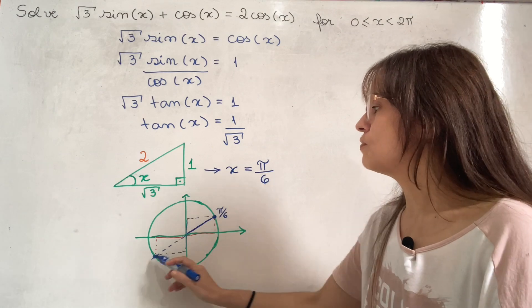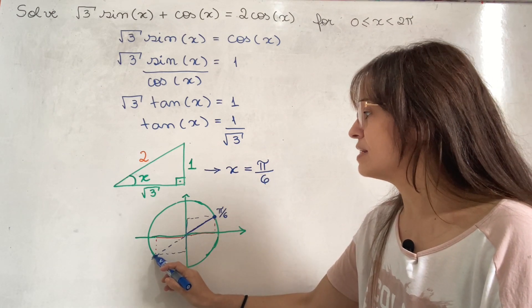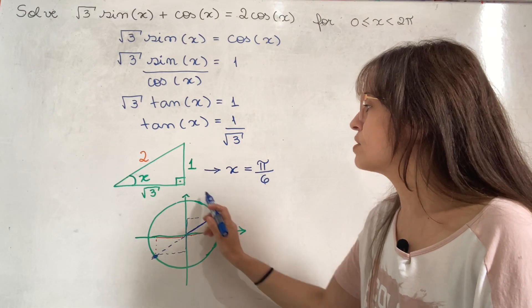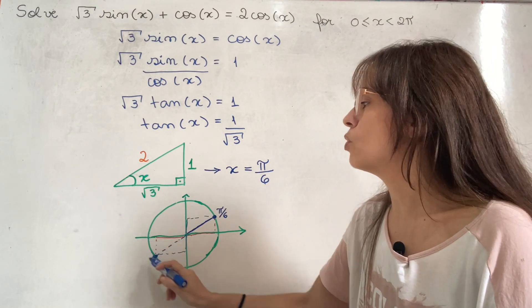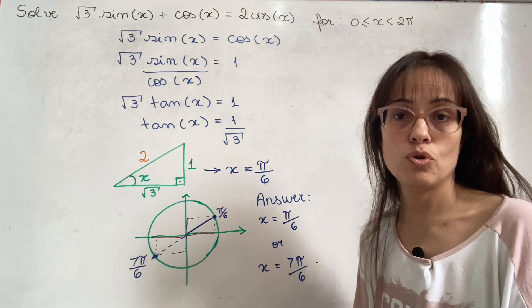So in order to write the answer, we just need to figure out what this angle is. Well, half a circle here was π. So that's 6π over 6 and one more, it's 7π over 6.